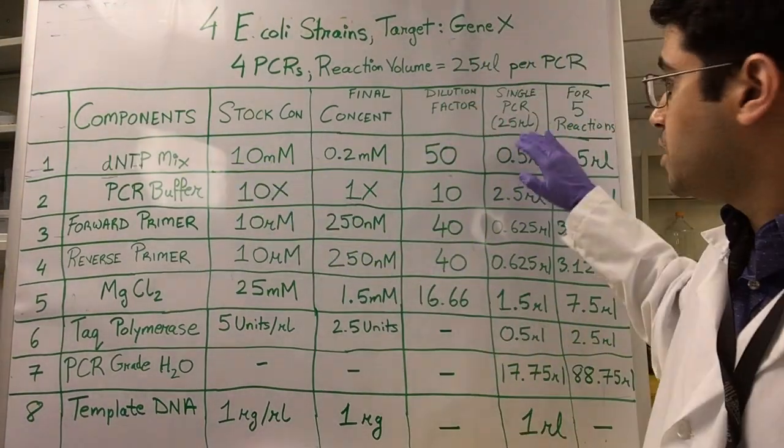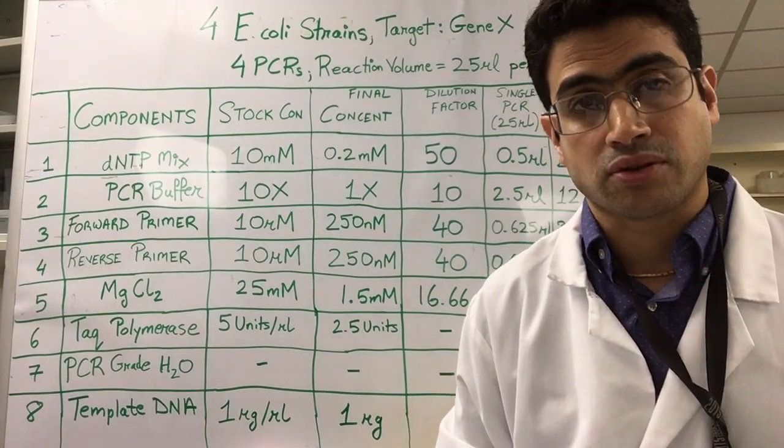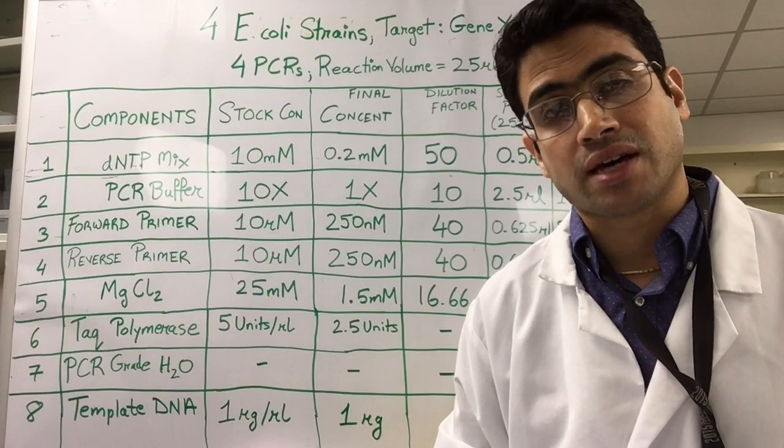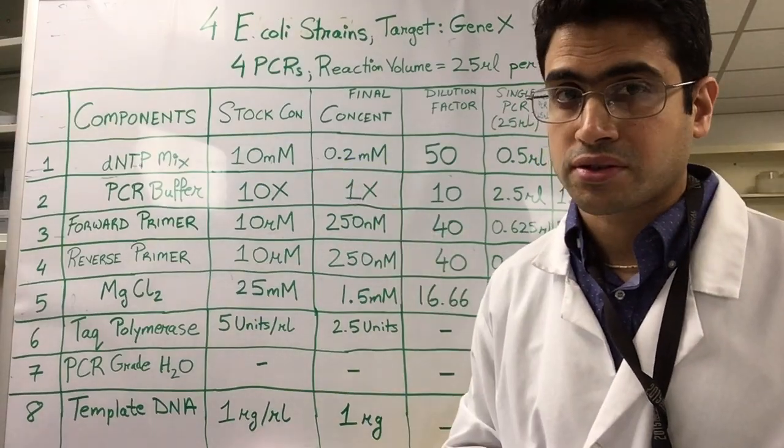So what this tells us is I need to take 0.5 microliters of the 10 millimolar stock of the DNTP mix in my final reaction volume of 25 microliters for an individual PCR tube and that will bring it down to the desired concentration of 0.2 millimolars.